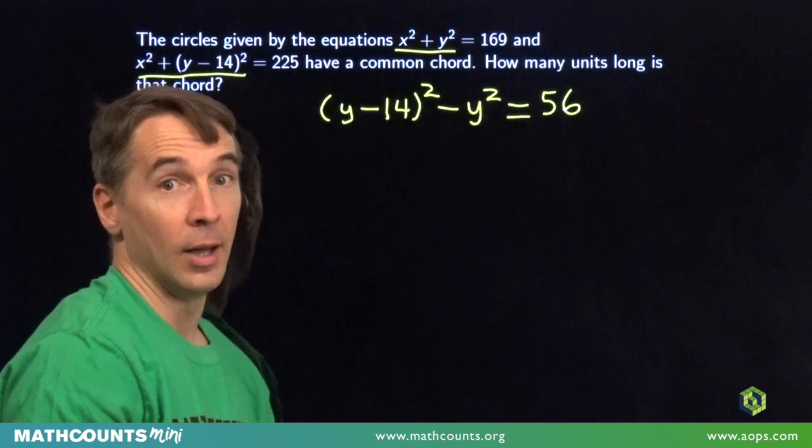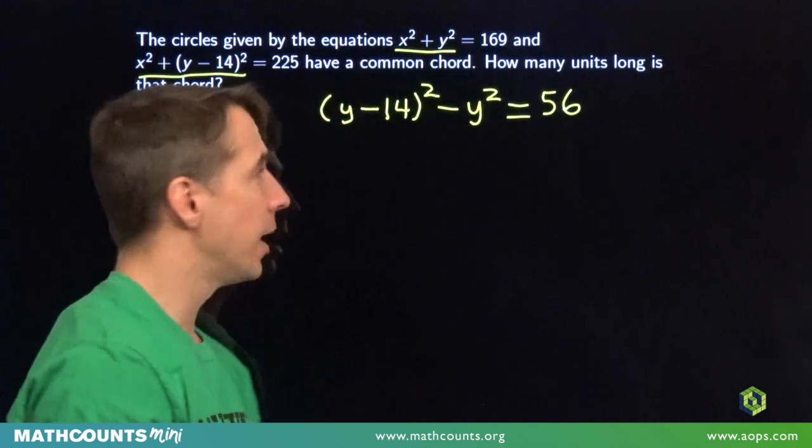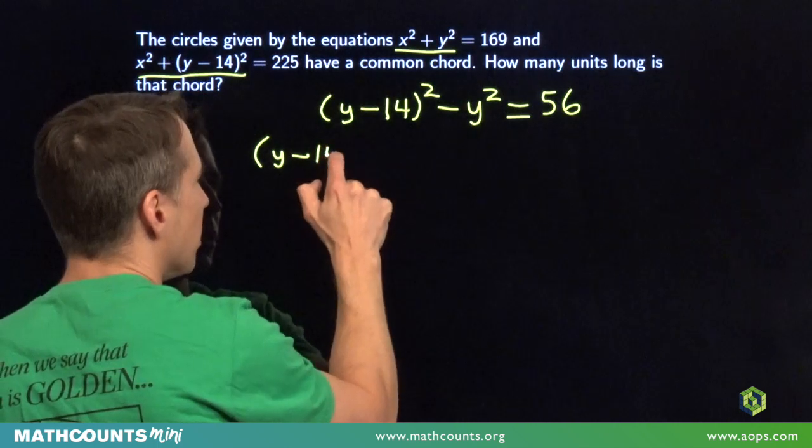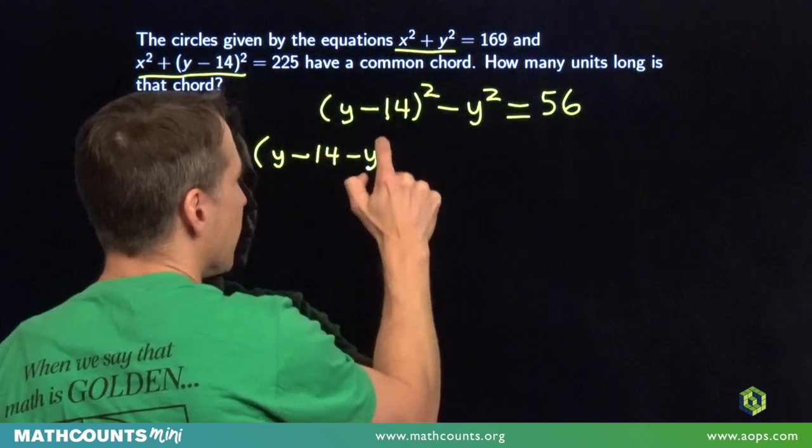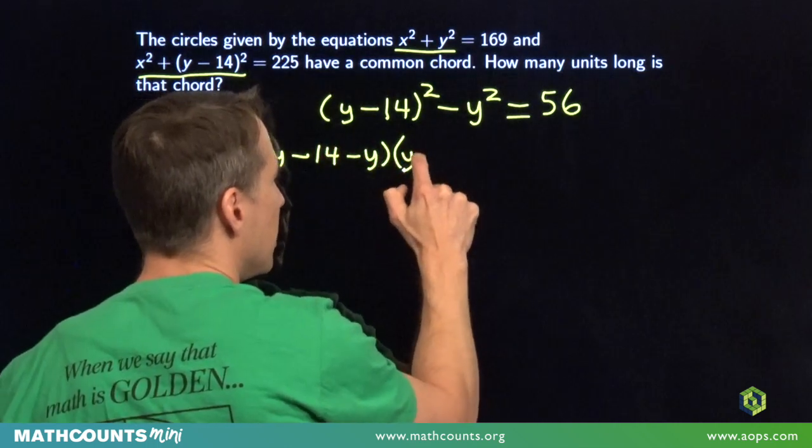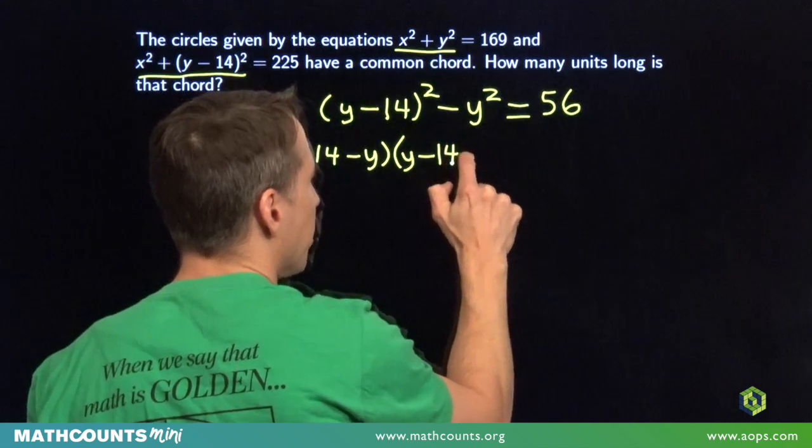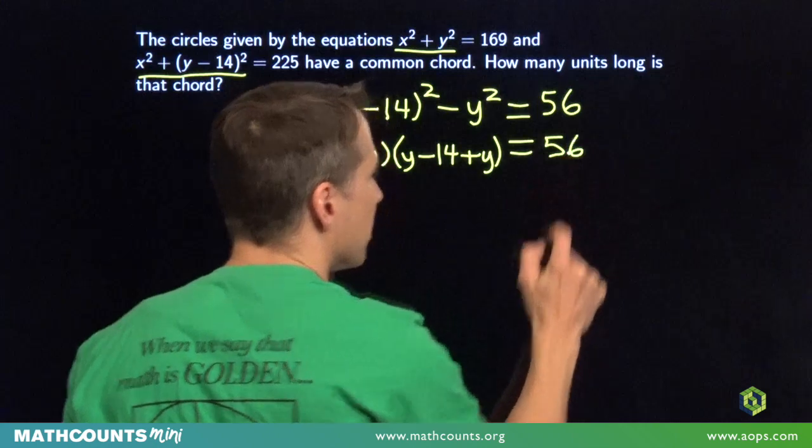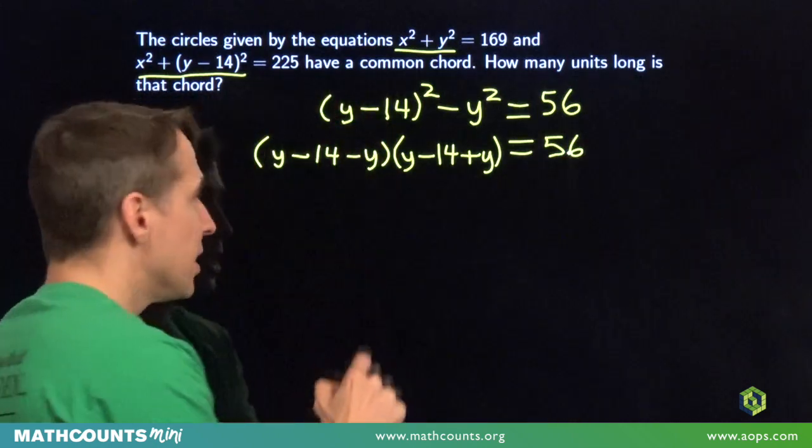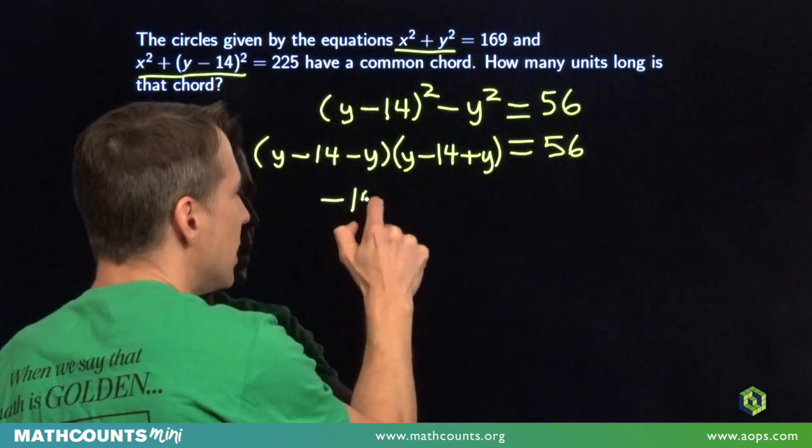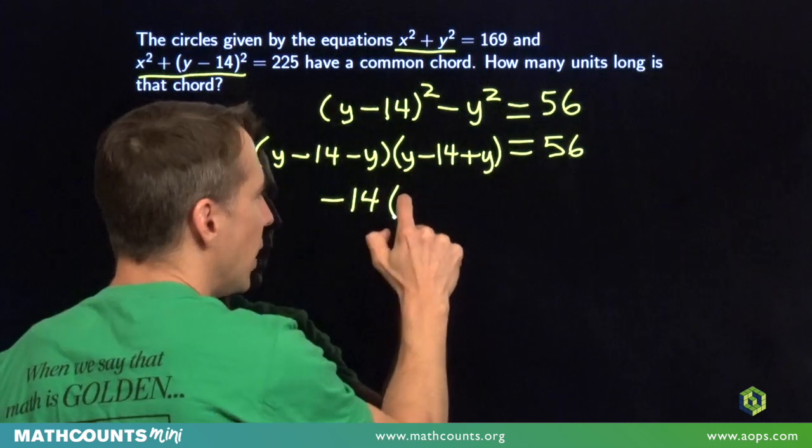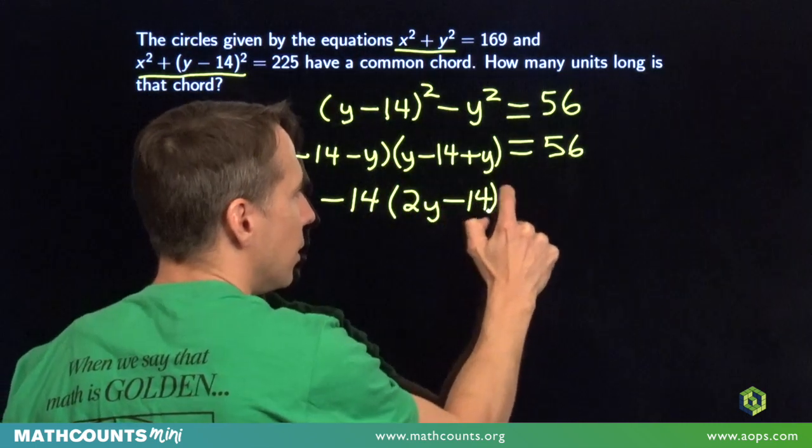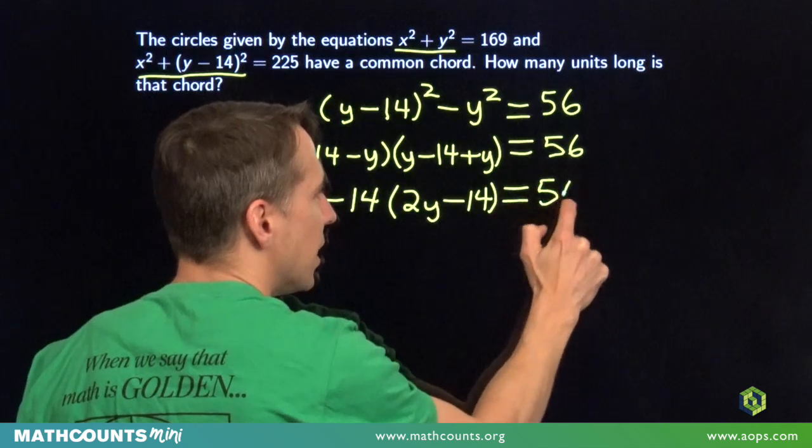Look at that on the left-hand side. We have another difference of squares. So we're going to factor that as a difference of squares. We'll have y minus 14 minus y times y minus 14 plus y. Still equals 56. Now these two y's cancel out. We're left with a minus 14. And then in here we have 2y minus 14. This still equals 56.